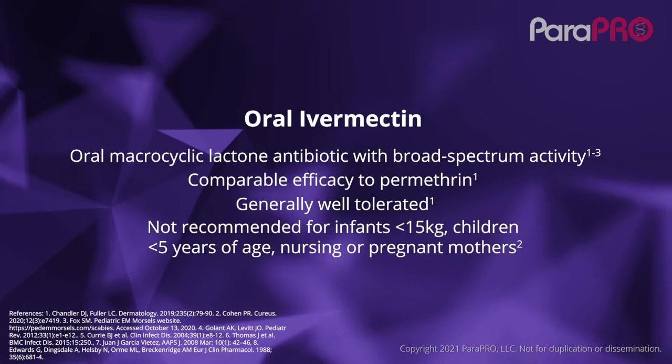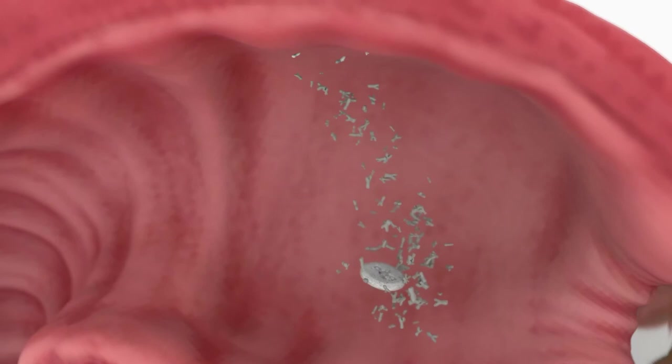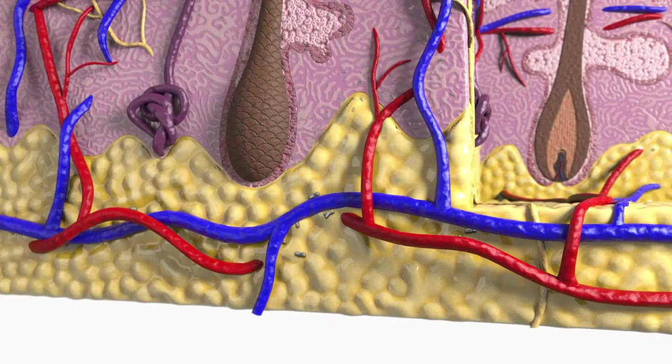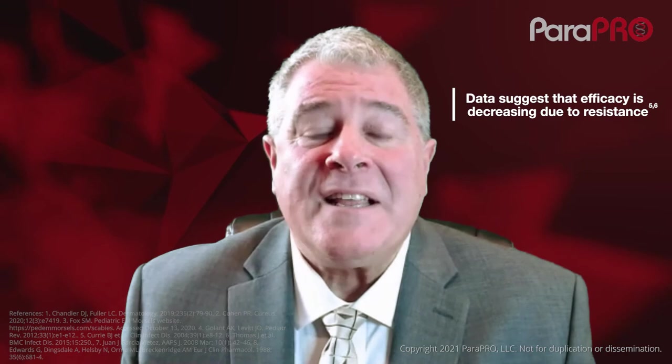Ivermectin is an oral agent used in the treatment of scabies. It is an off-label product and lacks ovicidal activity. However, it is as effective as permethrin. It is absorbed through the small intestine, travels through the bloodstream to other organs including the skin, and is then absorbed into the sebaceous glands and secreted to the stratum corneum, where the mites eat the drug. Clinical resistance to ivermectin has been documented.